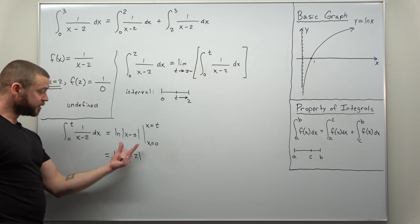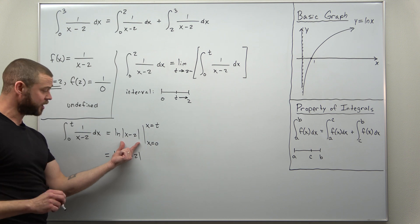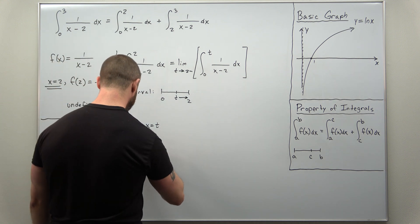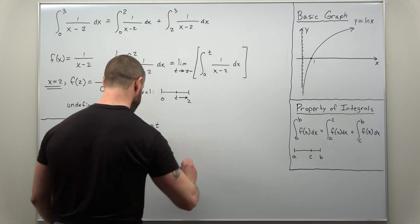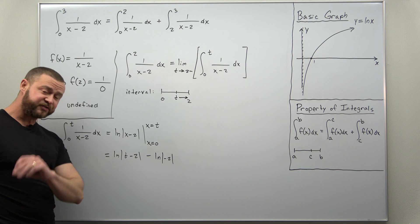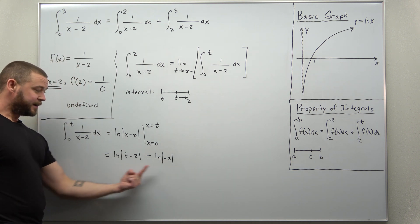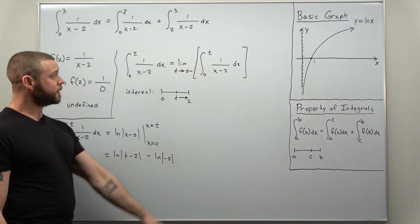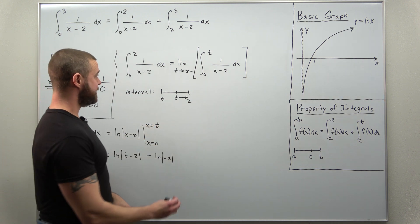Be careful here, your anti-derivative technically involves the absolute value there in the natural log function. So when we subtract, we get natural log of the absolute value of negative 2. And with the absolute value there, that makes the natural log defined, which is good. This is the value for our integral.